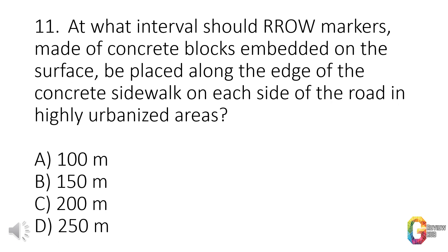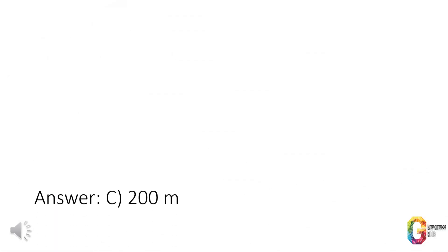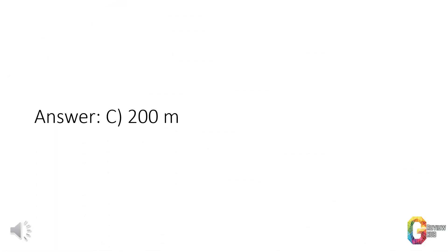Question 11. At what interval should RROW markers, made of concrete blocks embedded on the surface, be placed along the edge of the concrete sidewalk on each side of the road in highly urbanized areas? a. 100 m. b. 150 m. c. 200 m. d. 250 m. Answer: c. 200 m.